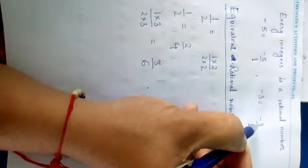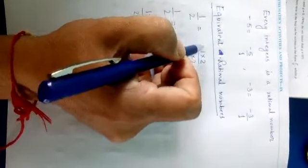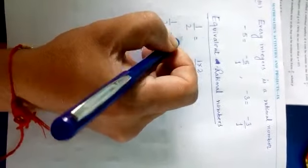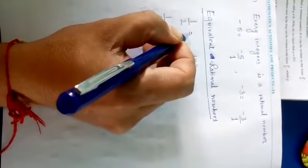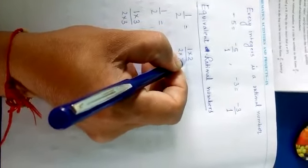Now one more, another point: equivalent rational numbers. If we have a rational number 1 upon 2, so 1 upon 2, if you multiply by 2 both in numerator and denominator, the number should be the same in both numerator and denominator.